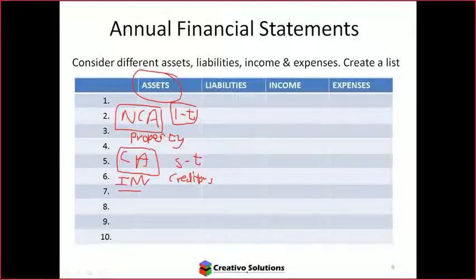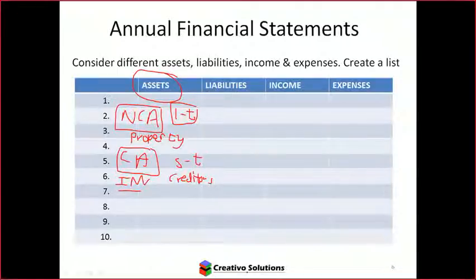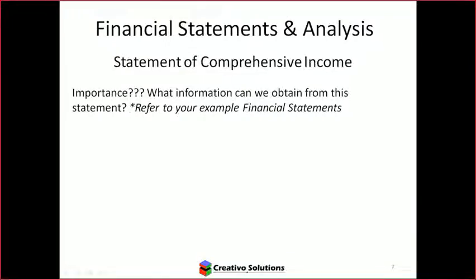Liabilities include loans, creditors, bank overdrafts, and revolving credit. Income and expenses are operational — seen on a day-to-day basis rather than as part of asset or liability management. Examples of income include sales and payments from debtors; expenses include office supplies, electricity, lights, and telephones. When looking at the statements, we need to pull out the key information.